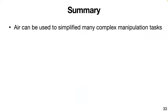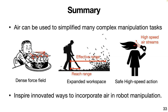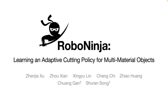The first work only considered flexible materials like cloth or bags. But there are many other kinds of deformable objects, and some may have more than one material. In the next project, I will show our recent work on multi-material objects, using cutting as the action primitive. We introduce RoboNinja — an adaptive cutting policy for multi-material objects.